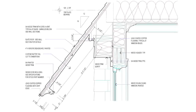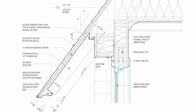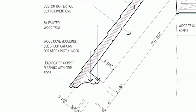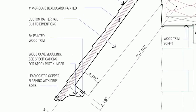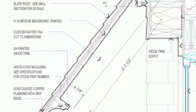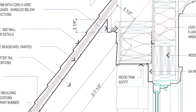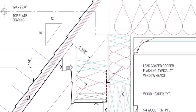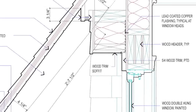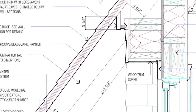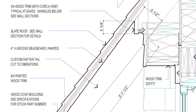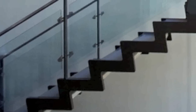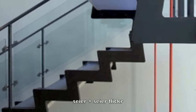The same is true for this eave detail. The drawing shows a standard cove molding at the end of a custom-cut rafter tail, as well as slate roof construction and the ventilation detail for the roof. I've also included lots of notes that couldn't have been included on a smaller three-quarter-inch wall section.